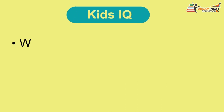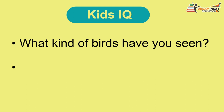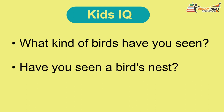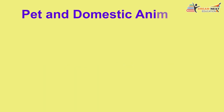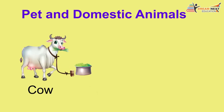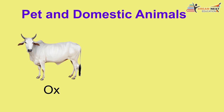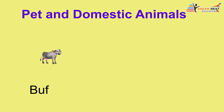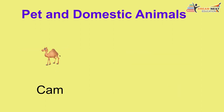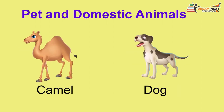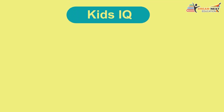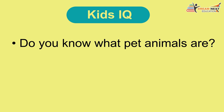Kids IQ: What kind of birds have you seen? Have you seen a bird's nest? Pet and domestic animals: cow, horse, ox, donkey, buffalo, cat, goat, rabbit, camel, dog. Kids IQ: Do you know what pet animals are? What does a cow eat?